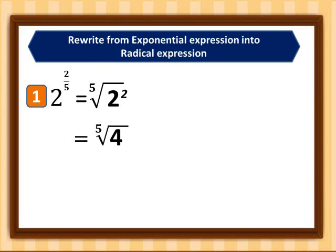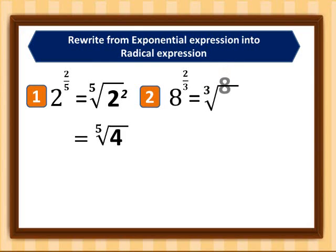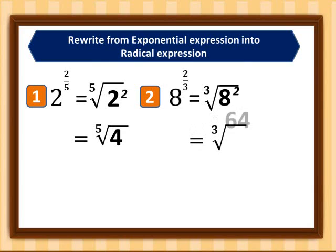For number two: eight raised to two-thirds. The index is three (cube root) and the radicand is eight raised to the power of two. So we have the cube root of eight squared, which is the cube root of 64. The cube root of 64 simplifies to four.